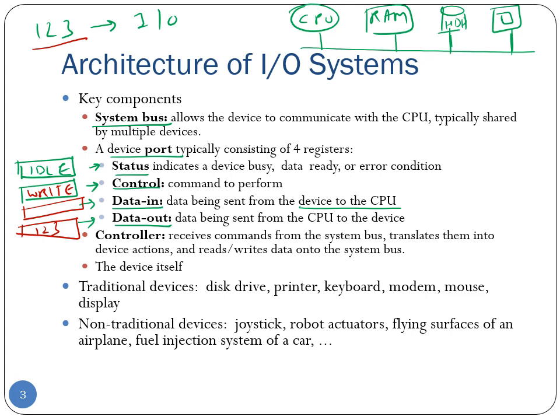Once the CPU has written the command in the control register, it will change the status of the device to indicate that the command is ready. When the I/O device detects that the command is ready, it can start working on it by changing the status to busy. I hope this example illustrates how these different registers are used by the I/O device to perform read and write operations.